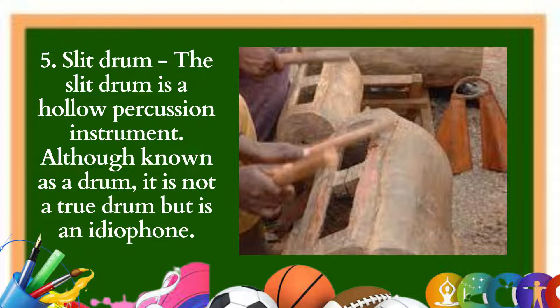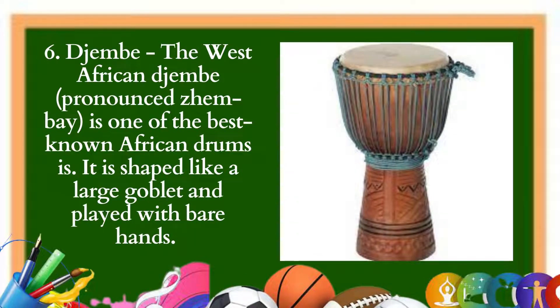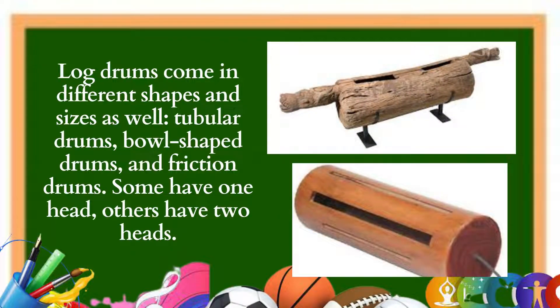6. Djembe: The West African djembe is one of the best known African drums. It is shaped like a large goblet and played with bare hands; the body is carved from a hollowed trunk and is covered in goat skin. Log drums come in different shapes and sizes — tubular, bowl-shaped, and friction drums — some with one head, others with two. The bigger the drum the lower the pitch; the more tension in the drum head the higher the tone. These drums are played using hands or sticks, sometimes with rattling metal and jingles attached outside or seeds and beads placed inside.